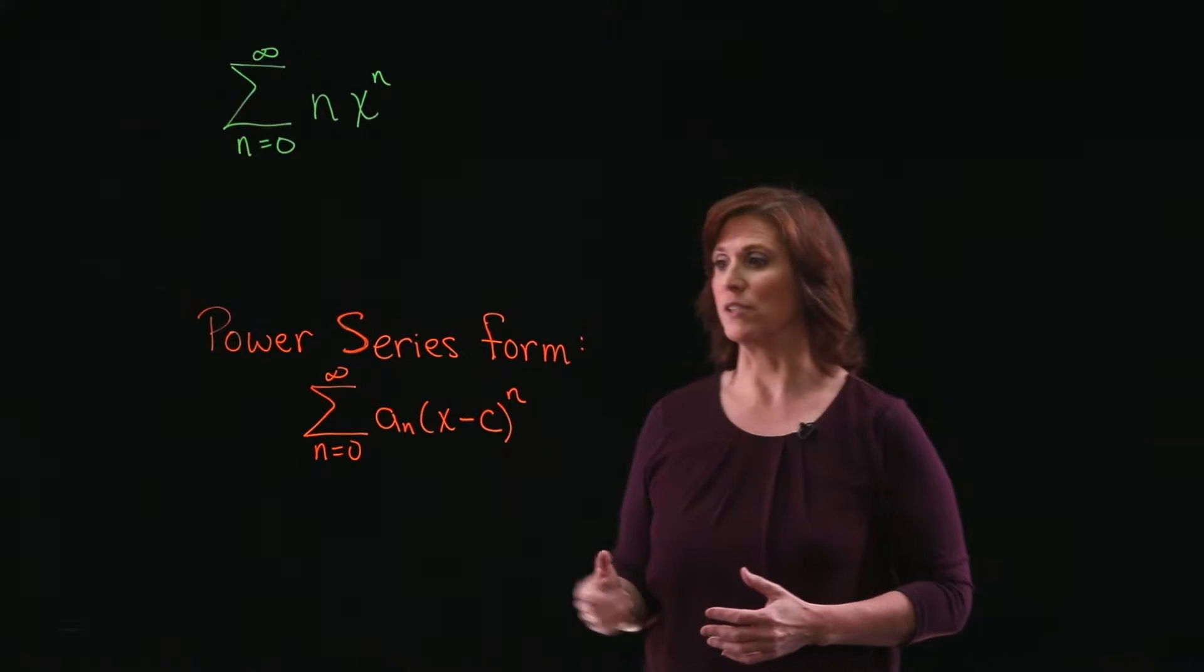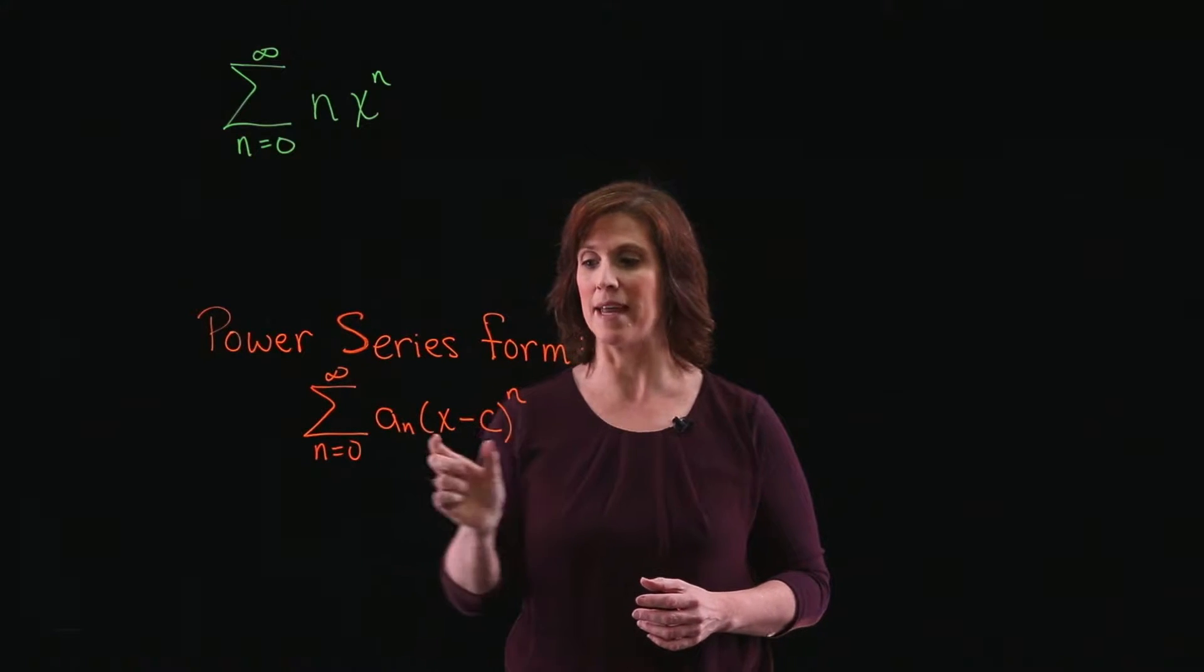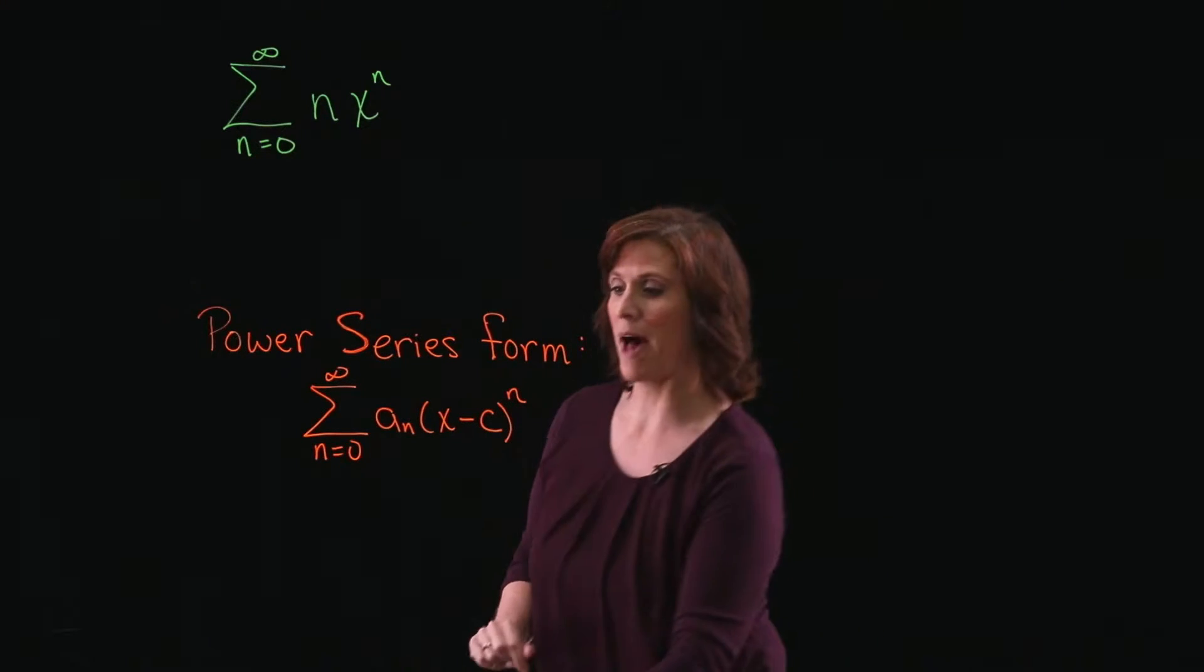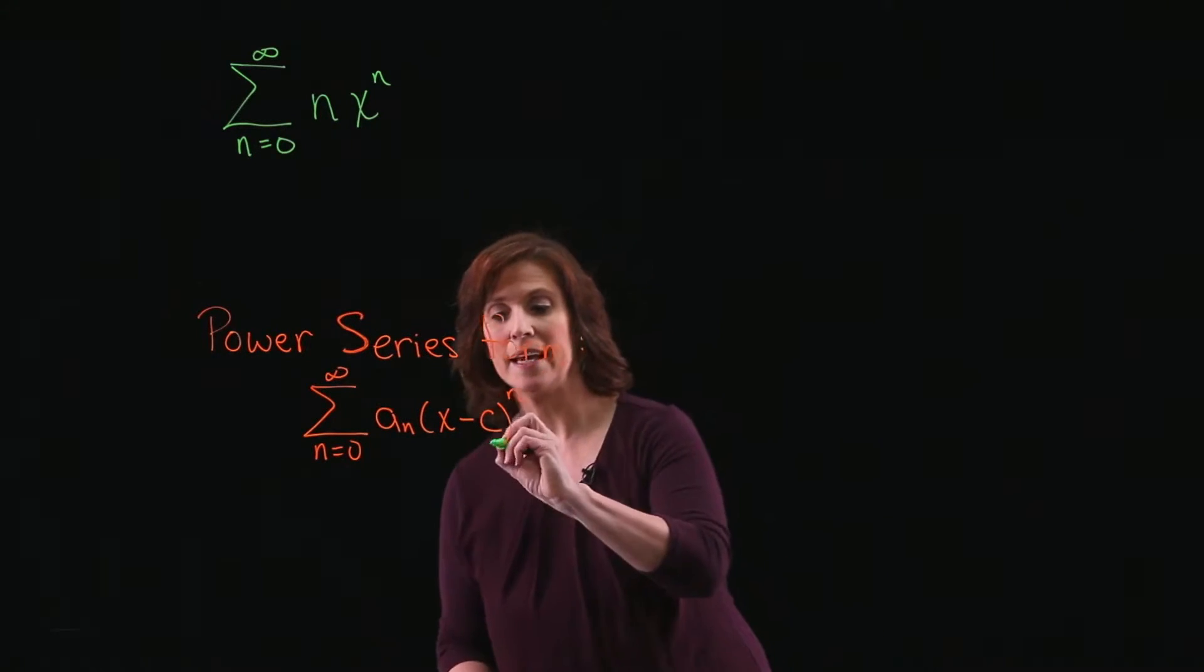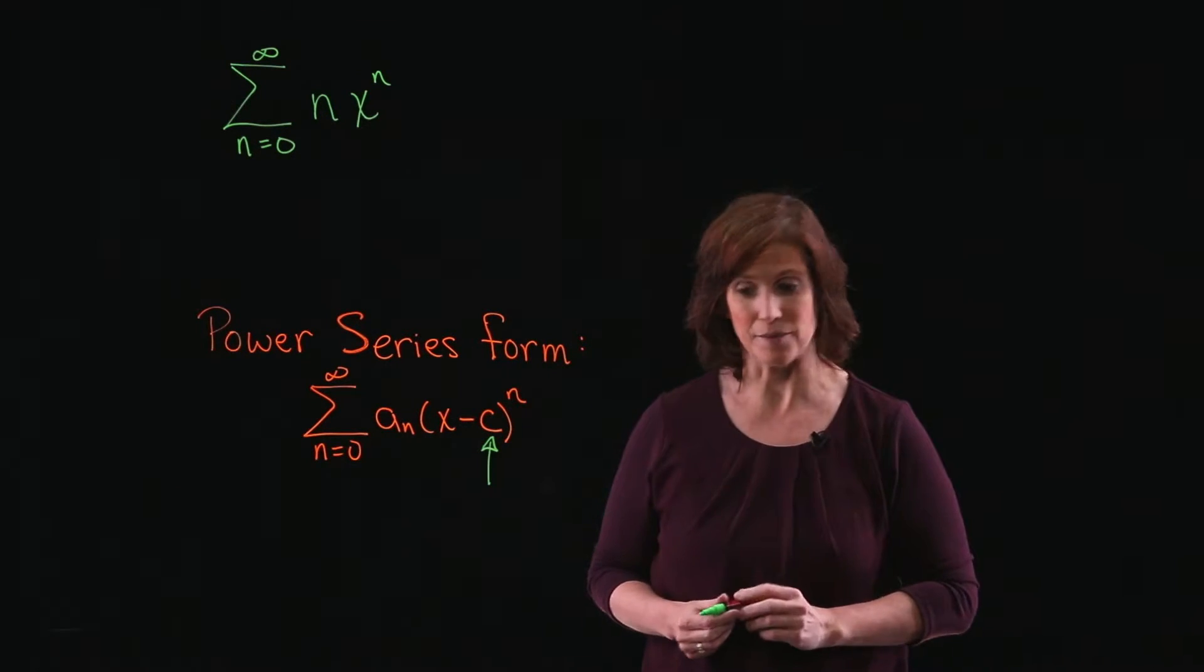We know that power series all have the form of the sum from n equals 0 to infinity of a sub n times x minus c to the n power, where c is the term that indicates where the power series is centered.